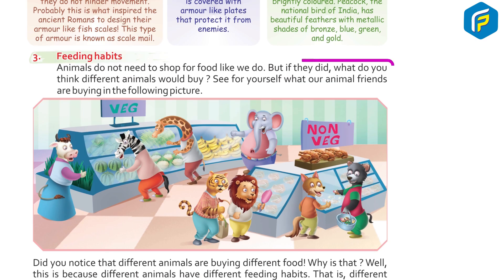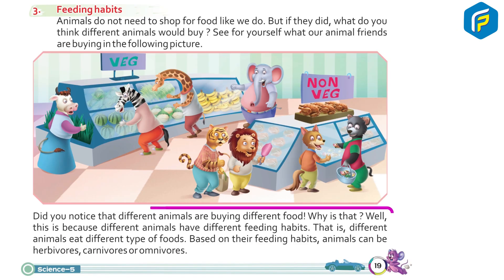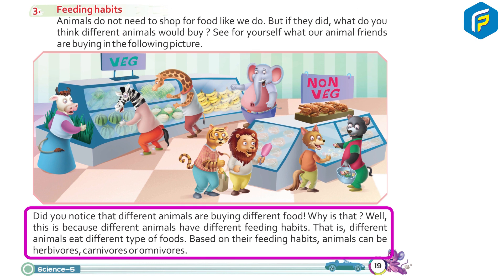Animals do not need to shop for food like we do. Different animals have different feeding habits — that is, different animals eat different types of food. Animals can be herbivorous, carnivorous, or omnivorous.